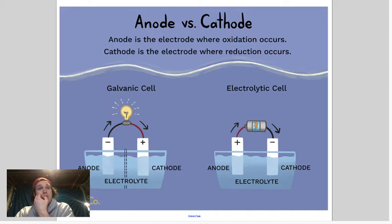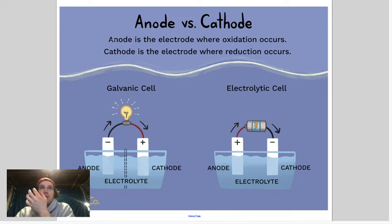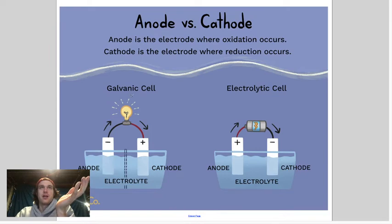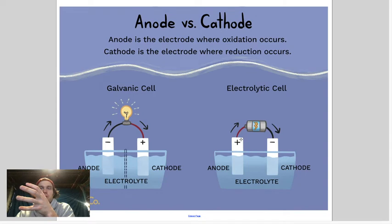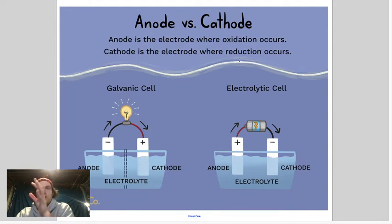On a battery there's a plus or minus side — you'll see terms like anode and cathode. The anode is where oxidation occurs, the cathode is where reduction occurs. We're not going to talk much about that — it's kind of above our head for this class. We're going to go more into the basics of circuitry and how electricity flows.